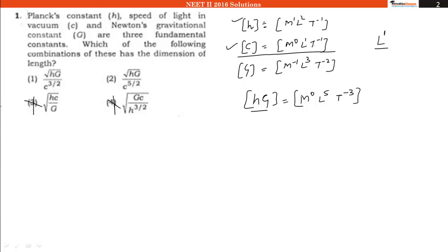In hG we have t raised to power -3, and in c we have t raised to power -1. So we have to use hG divided by c cubed. This should be there in our final answer.